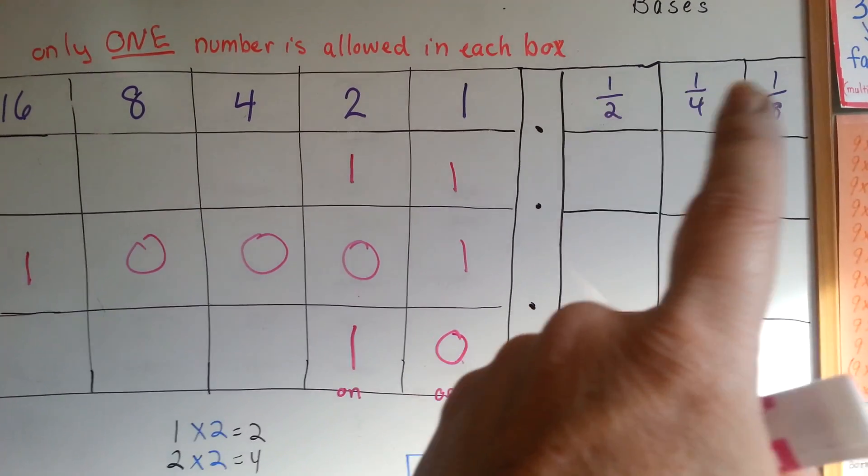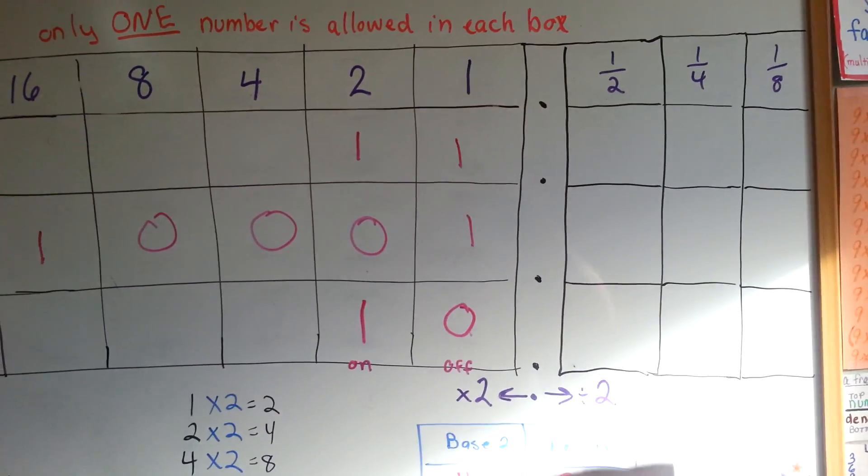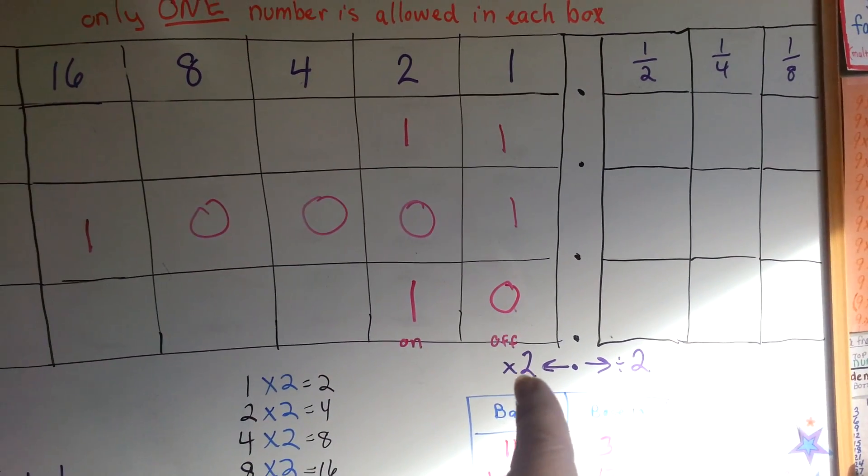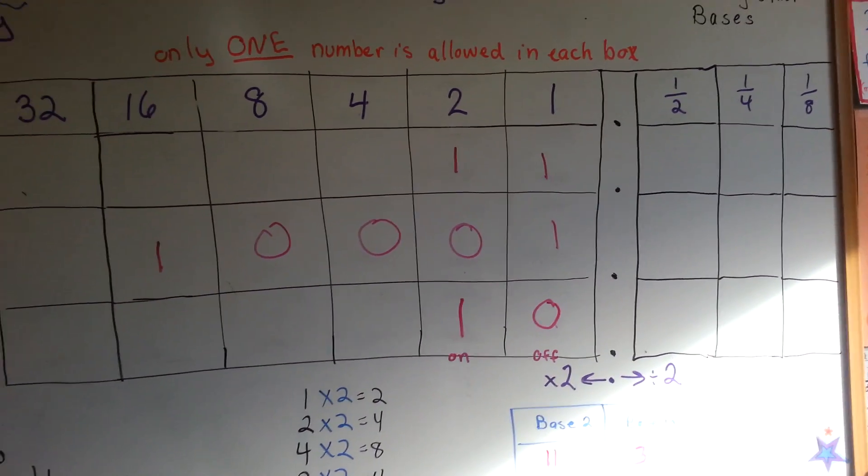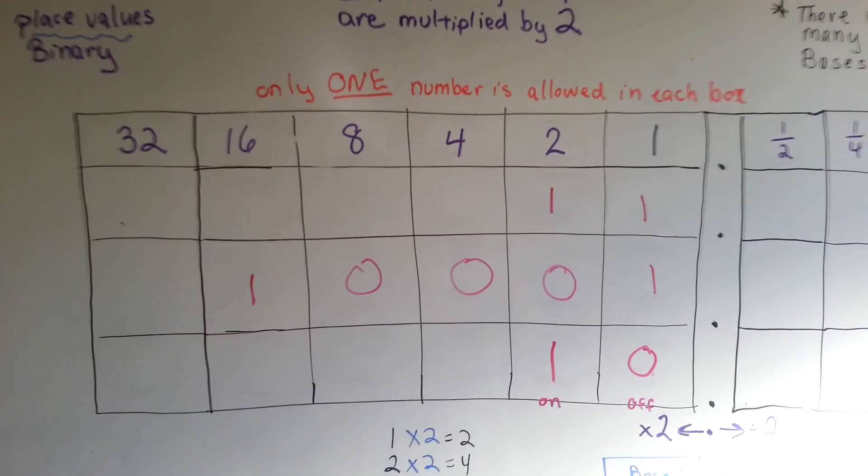That would be our place values going to the right. We would divide by 2. Multiply 2 on the left, divide by 2 on the right. And that is what base 2 is. That's what binary code is. That's what the computers use.